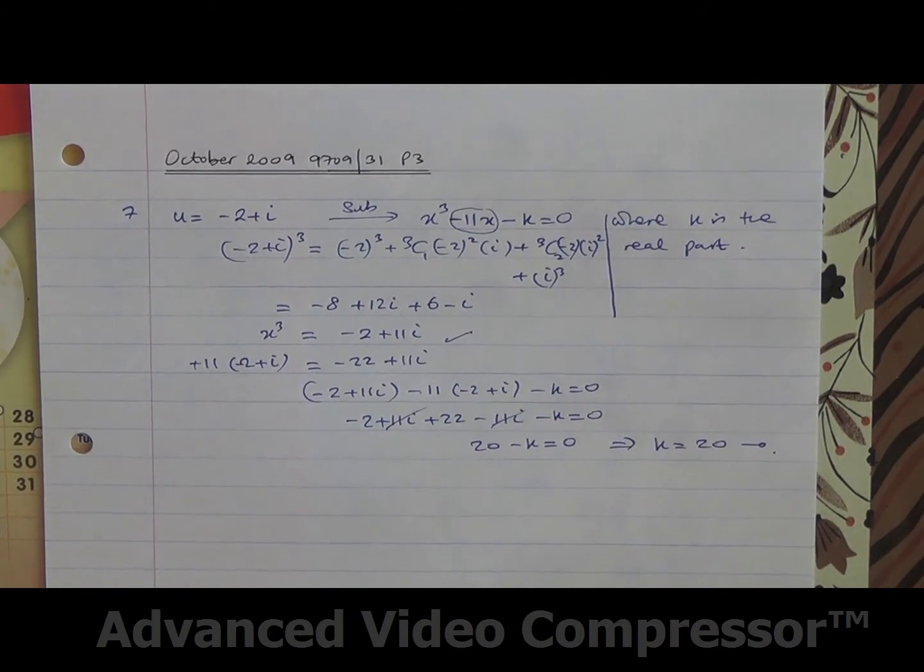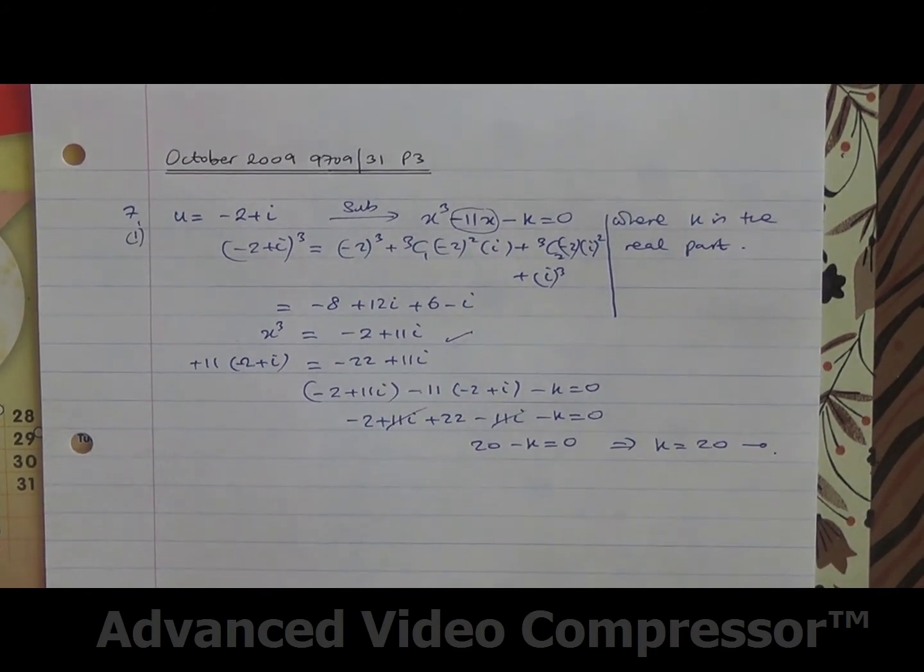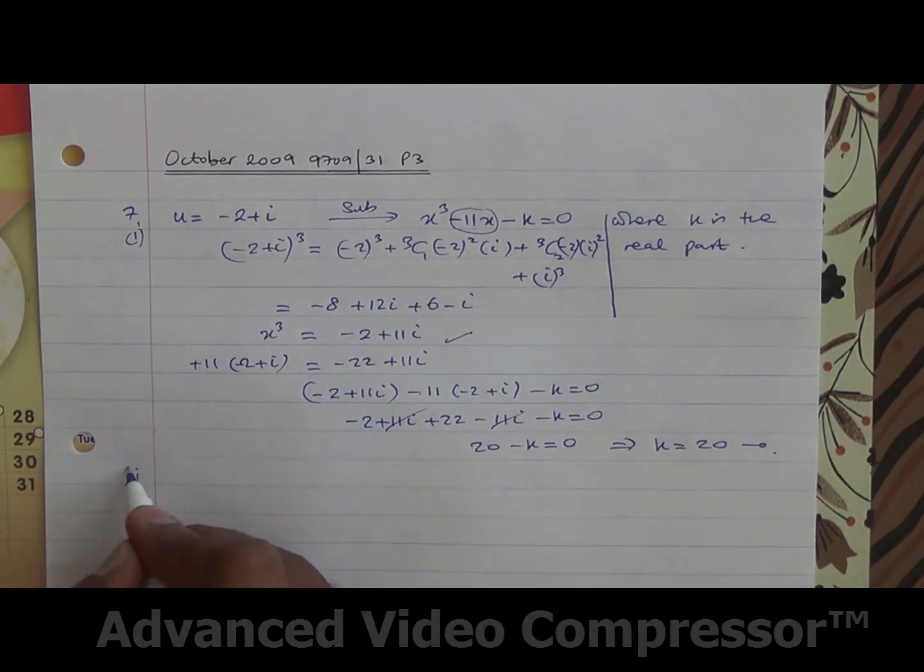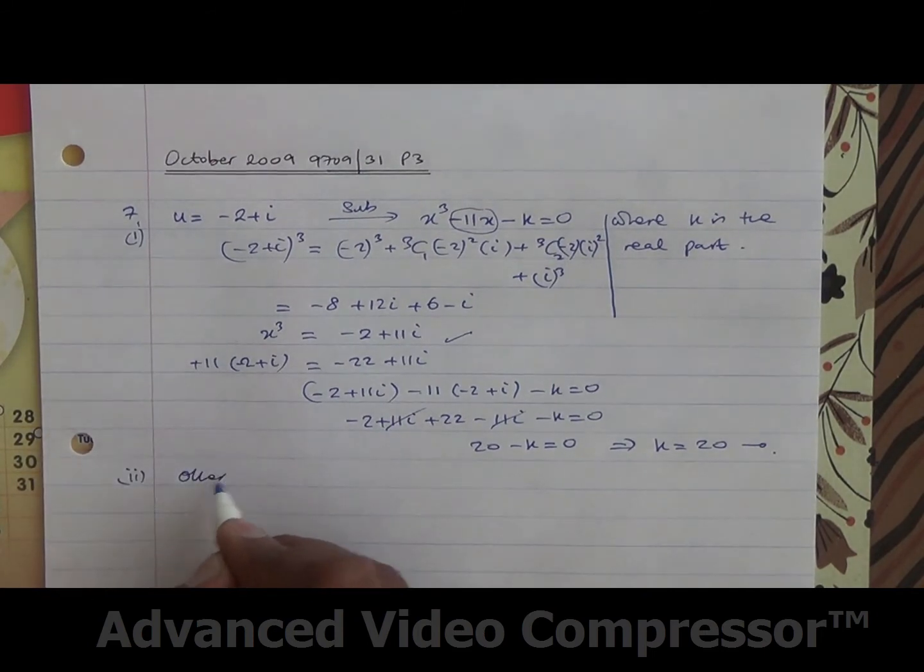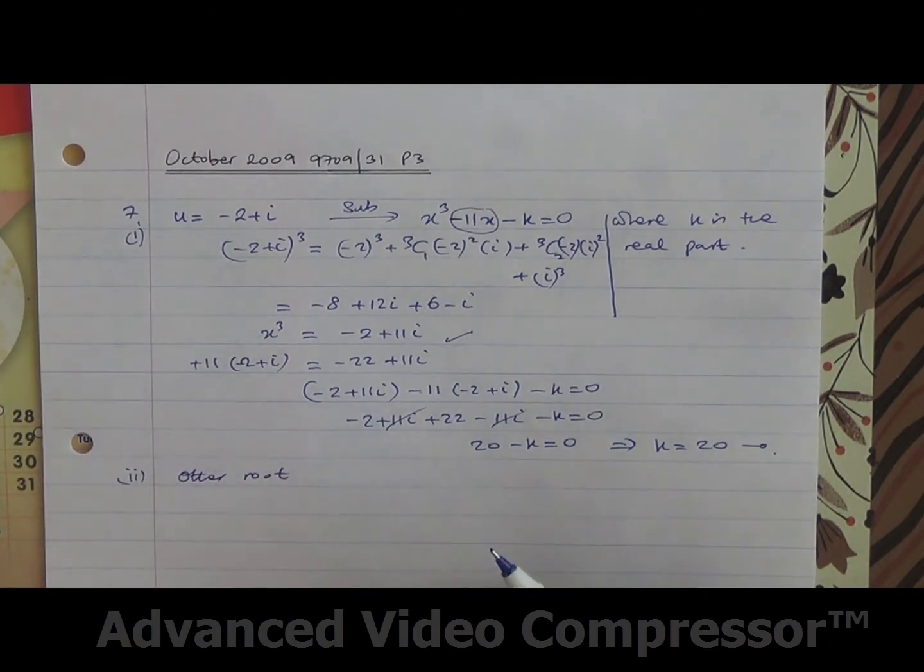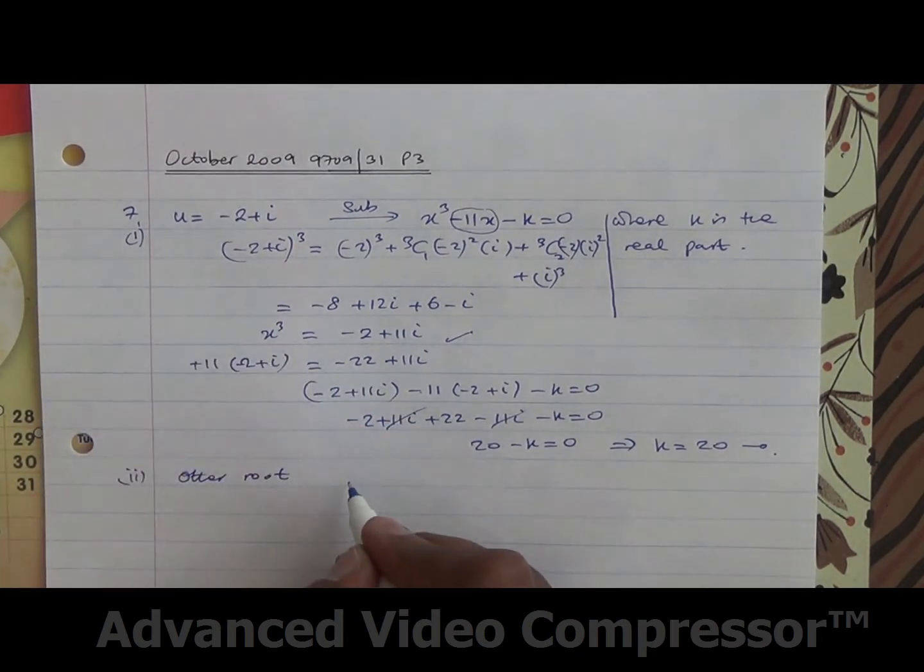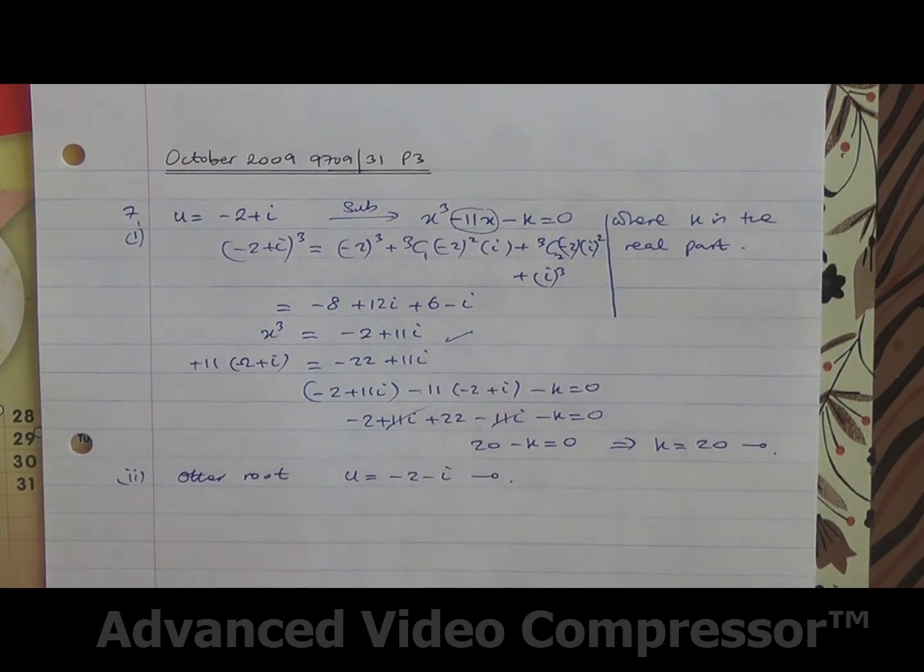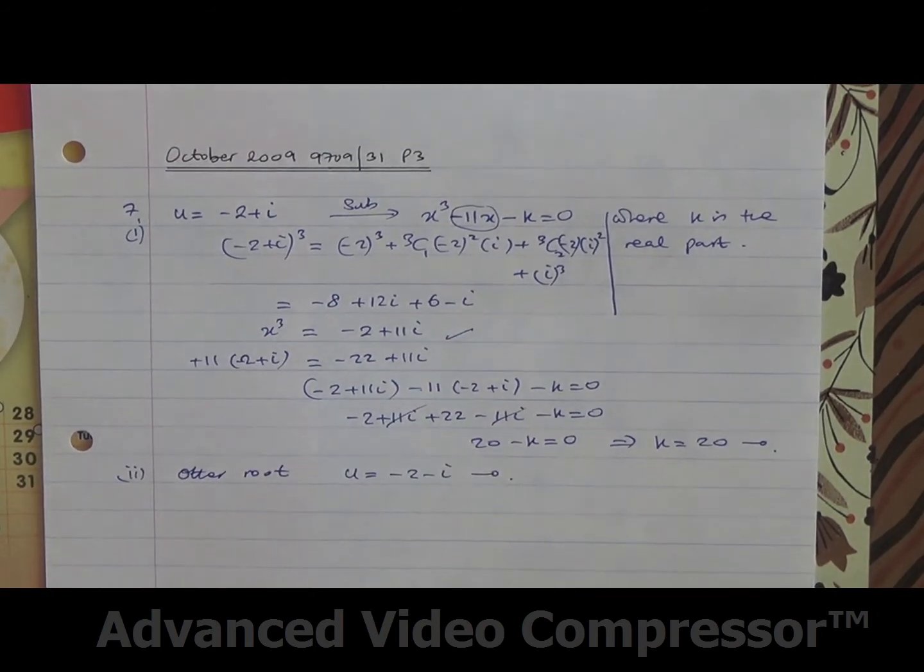Now, this is the first part of the question. For the second part, we need to write down the other root of the equation. So we know that this is the root, therefore the other root is going to be u equals minus 2 minus i. So that's the second part now.